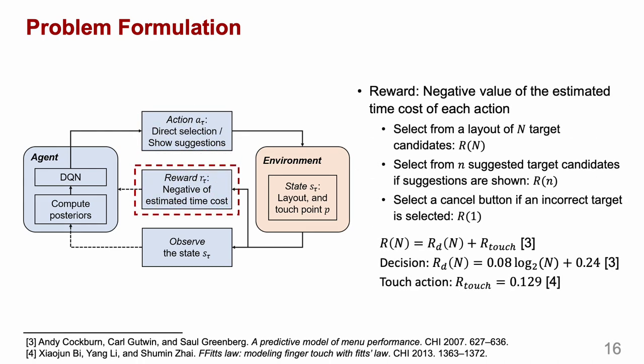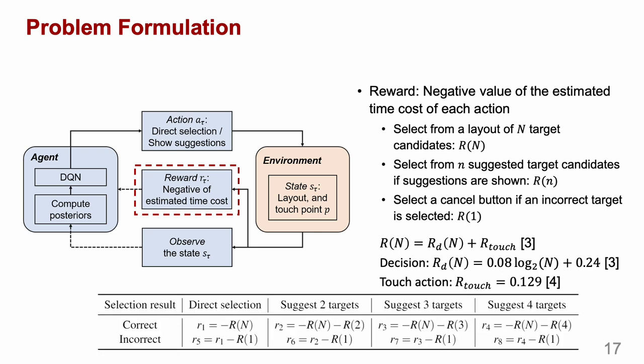After taking an action, the agent receives a reward immediately. The reward is defined as the negative value of the estimated time cost of each action, which consists of three parts: selecting a target from a layout, selecting from suggestions if they are shown, and selecting a cancel button if an incorrect target is selected. Those time costs were estimated based on empirical models from existing papers.